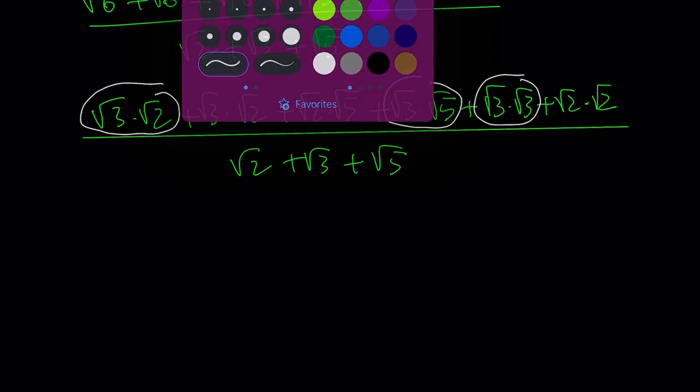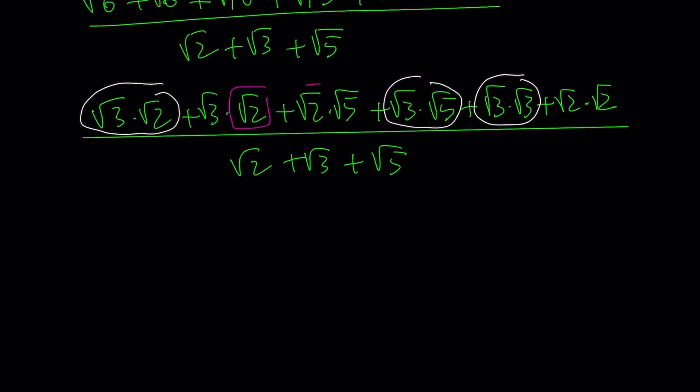And notice that the rest has the same type of feature so that we can safely say, hey, we have root 2 in common, root 2 in common, and root 2 in common. So that's good. Let's go ahead and proceed.